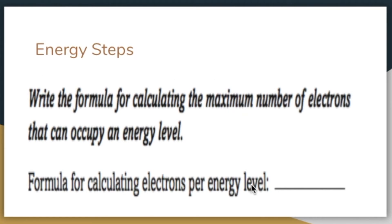To determine the maximum number of electrons that can occupy an energy level, use the formula 2n², where n equals the number of the energy level. So if you plug in n=1: 1 squared is 1, times 2 gives 2 — the first energy level can have 2. For n=2: 2 squared is 4, times 2 is 8 — level 2 can have 8. You continue to get 18 and 32, and you can use this formula for much larger elements with many more protons and electrons to figure out how many electrons each energy level can hold.